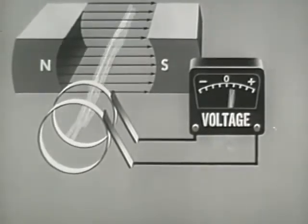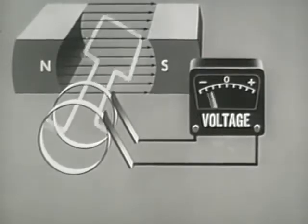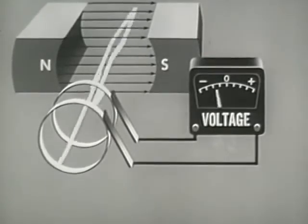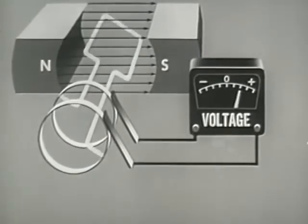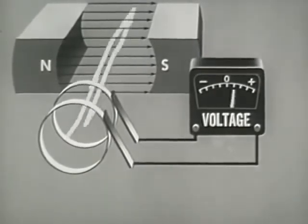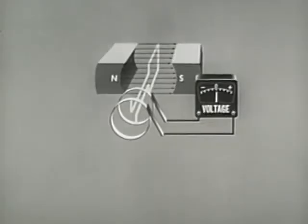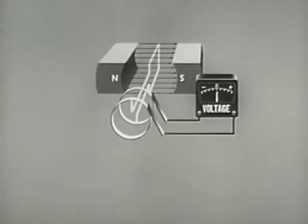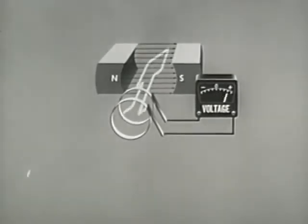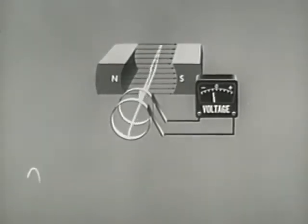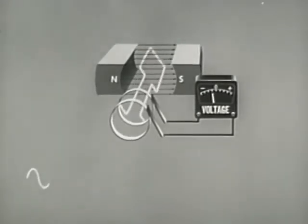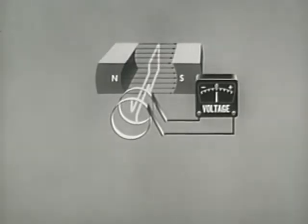This use of slip rings is the only structural difference between AC and DC generators. One complete revolution of the armature will produce one cycle of alternating voltage.